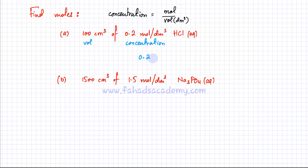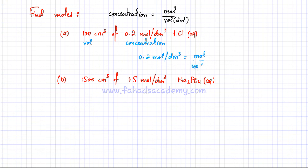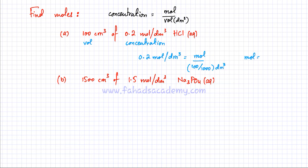Concentration of HCl = 0.2 mol/dm³. Using concentration = moles / volume: 0.2 = moles / (100/1000). Solving: moles = 0.2 × 0.1 = 0.02 moles. So there are 0.02 moles of HCl in this solution.